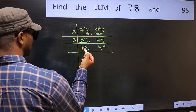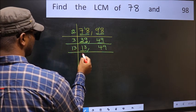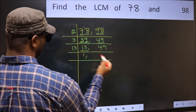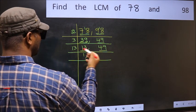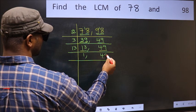Now here we have 13. 13 is a prime number. So 13 once, 13. The other number 49, not divisible by 13, so you write it down as it is.